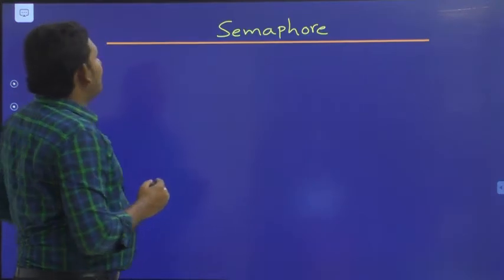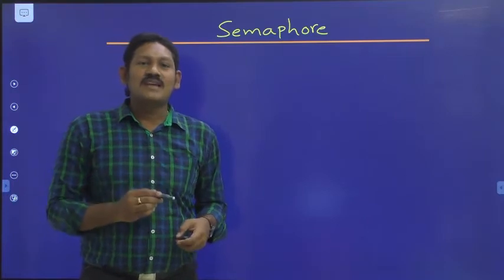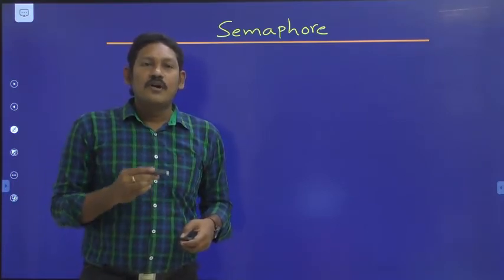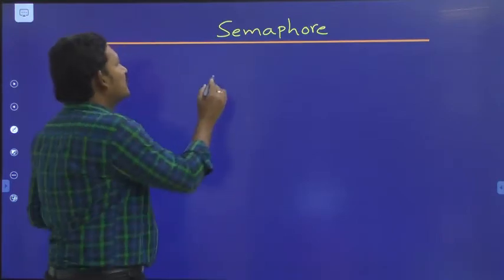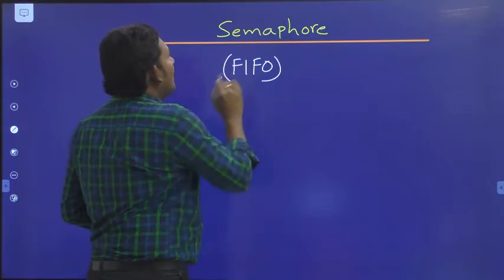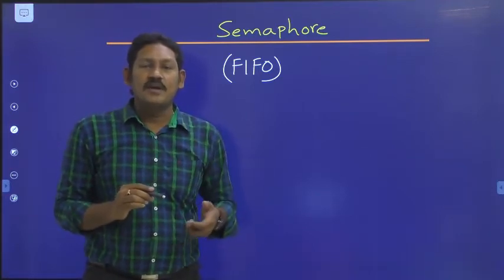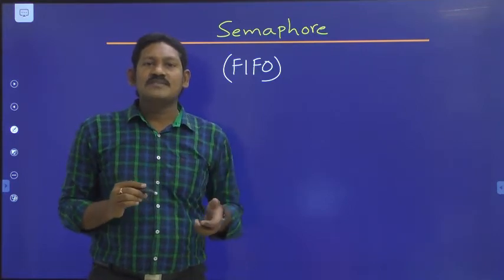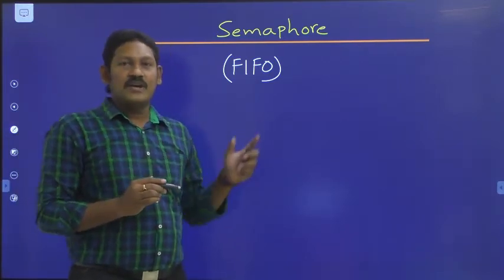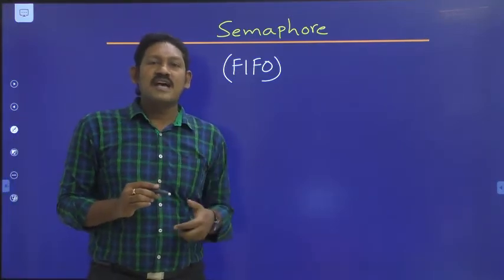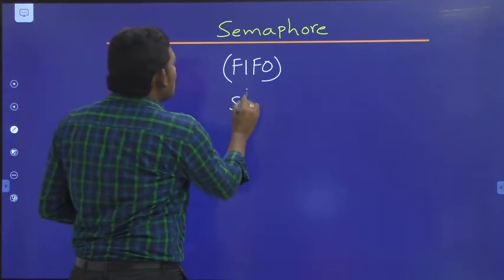Coming to the next mechanism: semaphore. When a process tries to access a semaphore which is not available, the semaphore puts that process on a waiting queue and puts the task to sleep. Therefore the semaphore is also known as a sleeping lock.